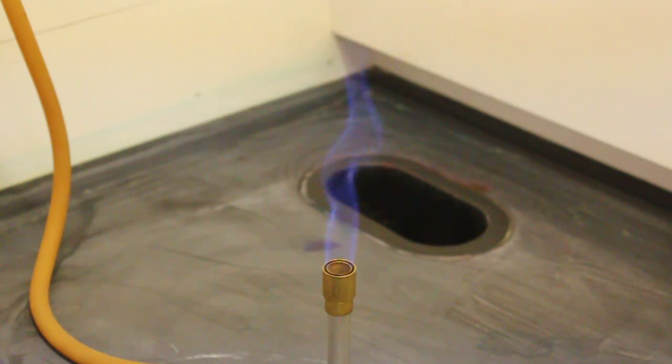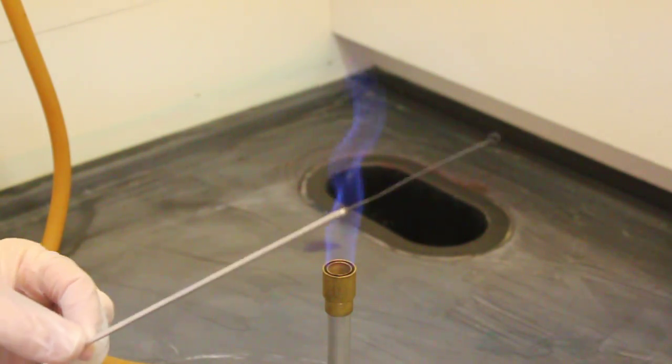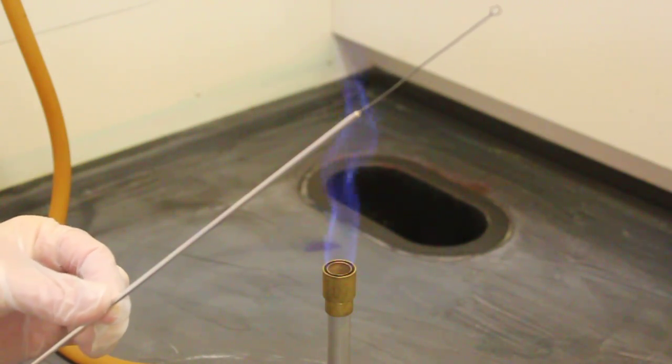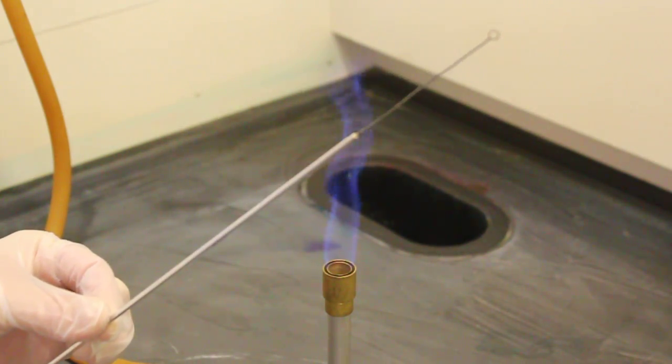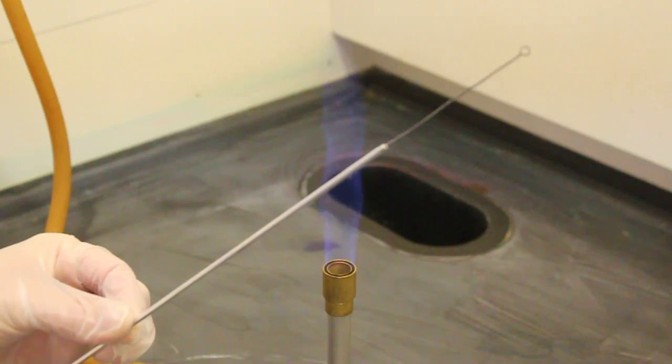I'm now going to demonstrate how to properly sterilize the inoculating loop. This is the inoculating loop that is used to transfer bacteria from one location to another in the microbiology lab.